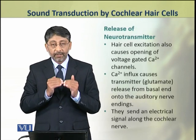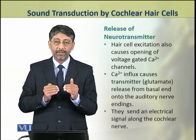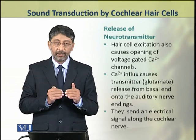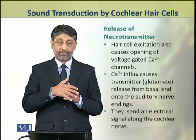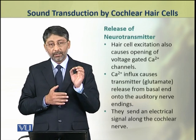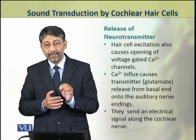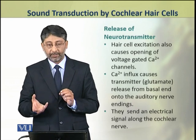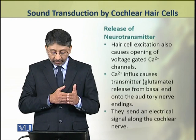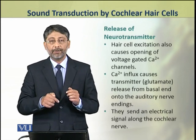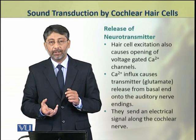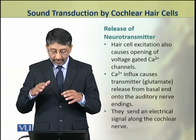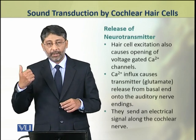The hair cell excitation also results in the opening of voltage-gated calcium channels. As a result, calcium ions also influx, and this influx causes transmitter release from the basal end. The transmitter is usually glutamate, released from the basal end onto the auditory nerve endings attached to the hair cells. These auditory nerves then take the electrical signal along the cochlear nerve and onward to the brain.